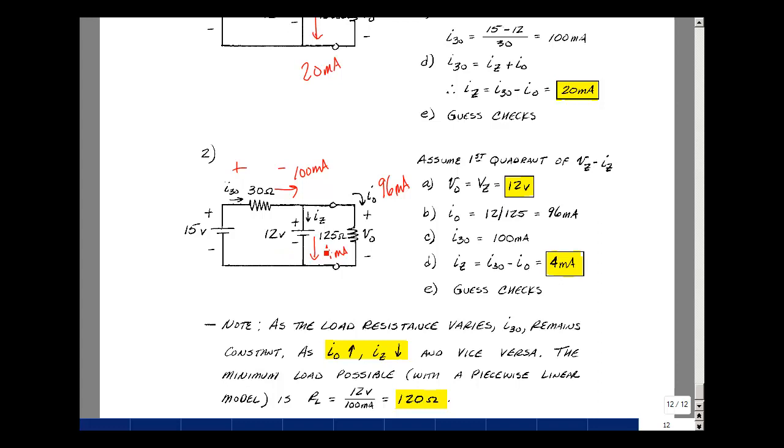This is how a regulator works. It keeps a constant voltage across the load, and it takes up whatever current is left over, up to a point. This is some information about a Zener diode and using it as a regulator.